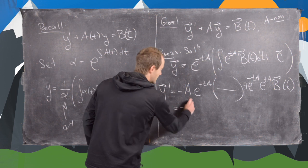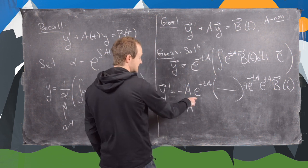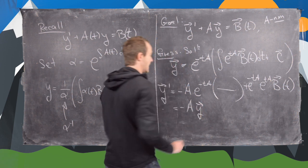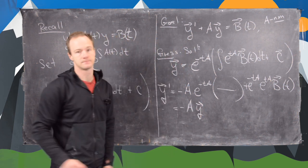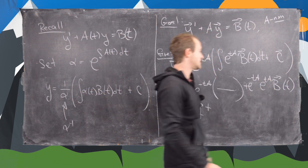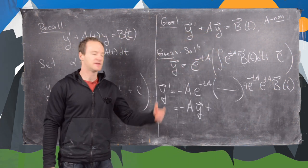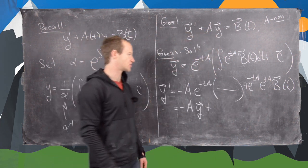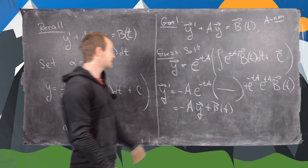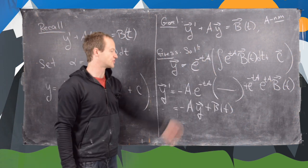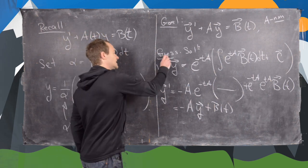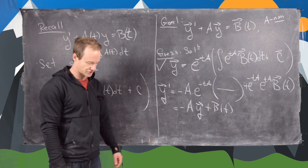So this is equal to minus A times — notice this whole thing is y — plus, it turns out these two matrix exponentials are inverses of each other, and so we get plus vector b of t. But that's just a rewriting of our original differential equation, so yes, this is a solution to our differential equation.